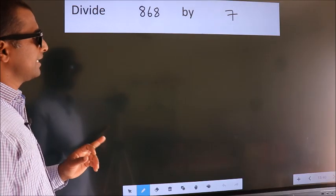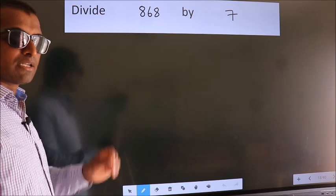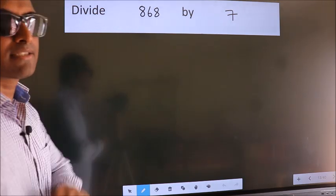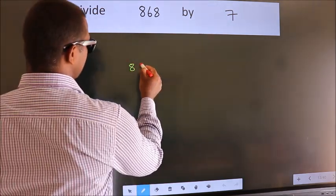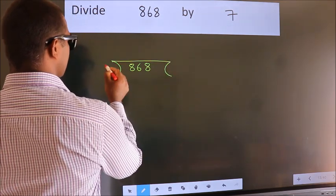Divide 868 by 7. To do this division, we should frame it in this way. 868 here, 7 here.